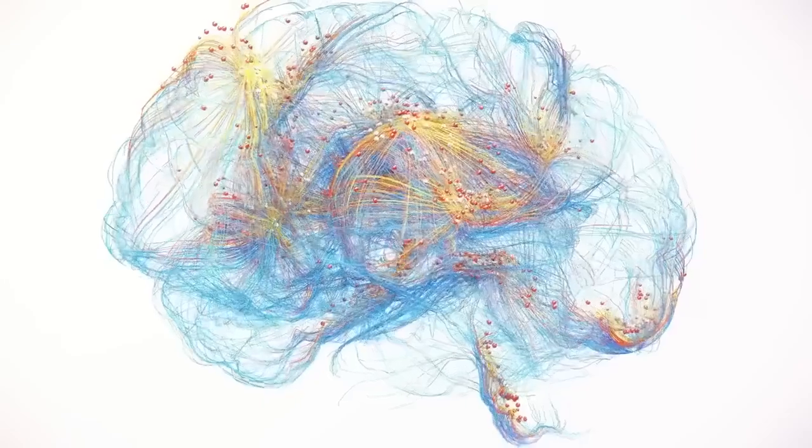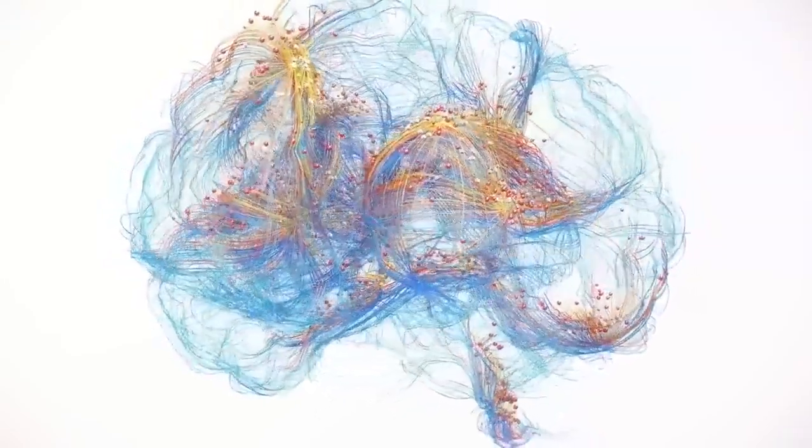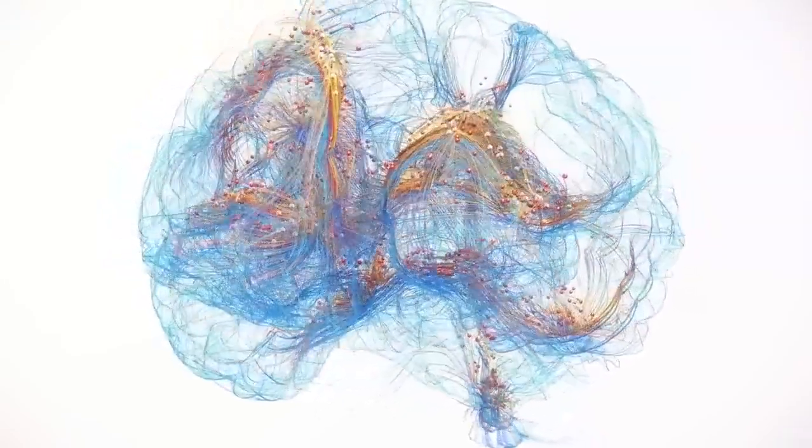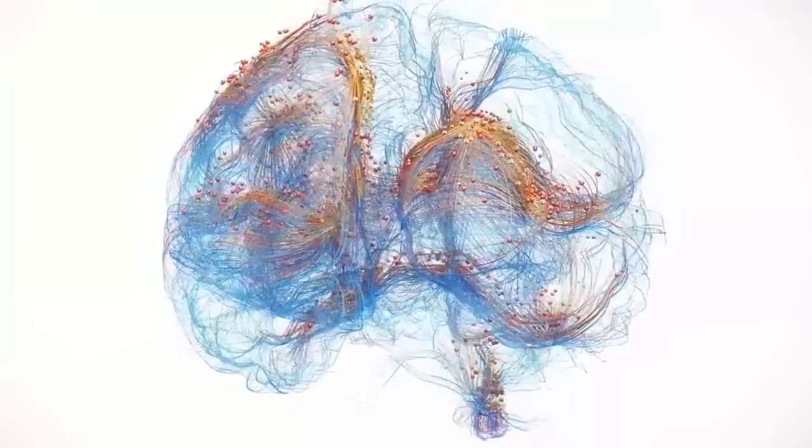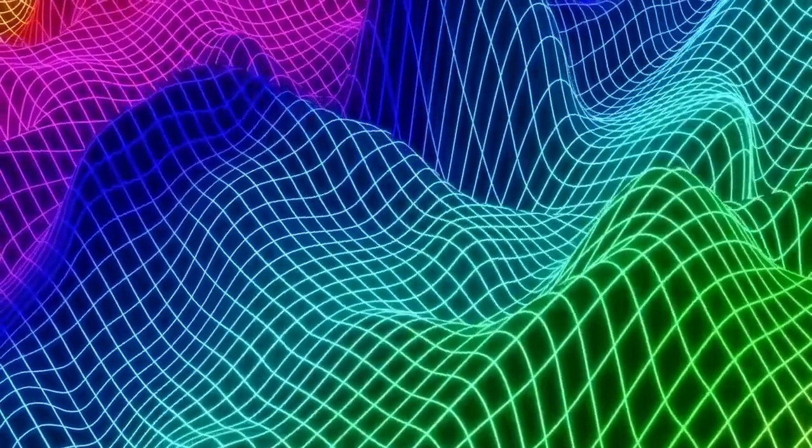Instead of resolving into individual outcomes, the simulations forked again and again, building an ever more intricate tree of quantum paths. These weren't divergent results, they were entangled timelines feeding back into one another recursively. The AI translated this into a fractal causality lattice.